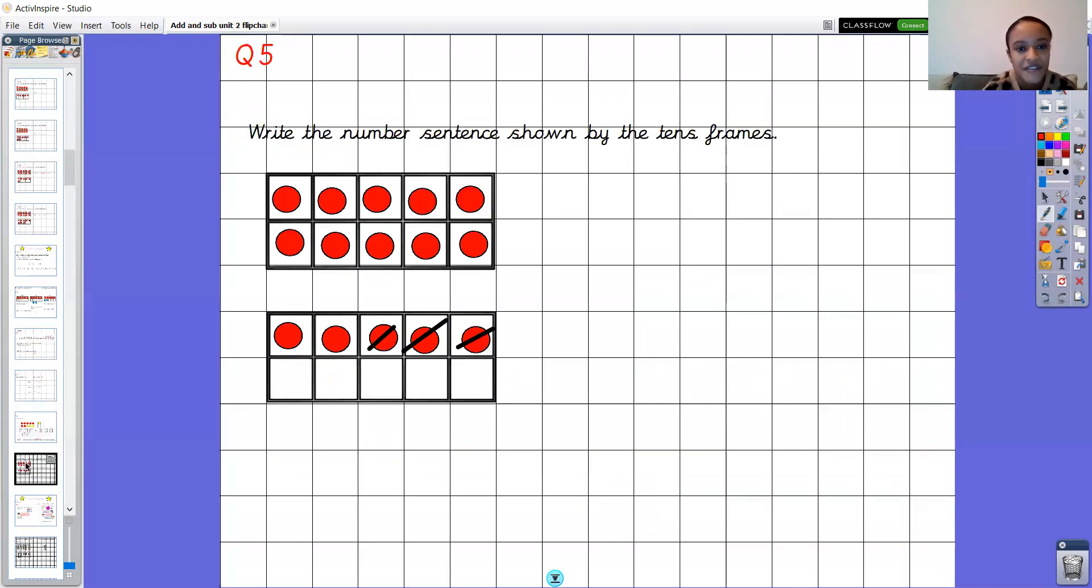Right question number five. We're thinking about some subtraction now, which is what we thought about yesterday. So the question is asking you to write the number sentence shown by the tens frame. So you're thinking about finding out the whole number, finding out how many you've taken away and what is the answer. Pause the video and have a go at writing the number sentence that is shown by the tens frame.